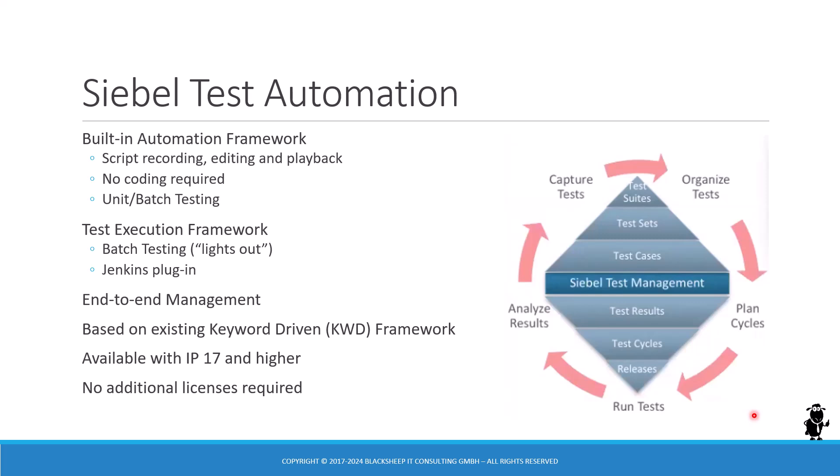Automating Siebel applications or any enterprise applications is not a new concept. The Siebel Test Automation that we talk about in this course has been introduced with IP 17 and is available in IP 17 and higher. That includes a built-in automation framework which allows you to record scripts, edit those scripts, and playback those scripts without any coding — and you can include custom code, but that is not required.